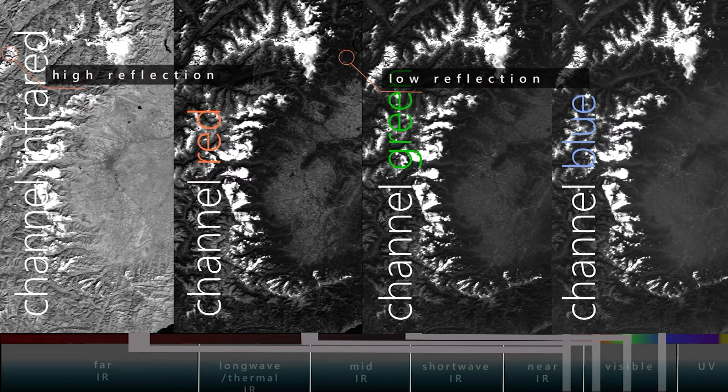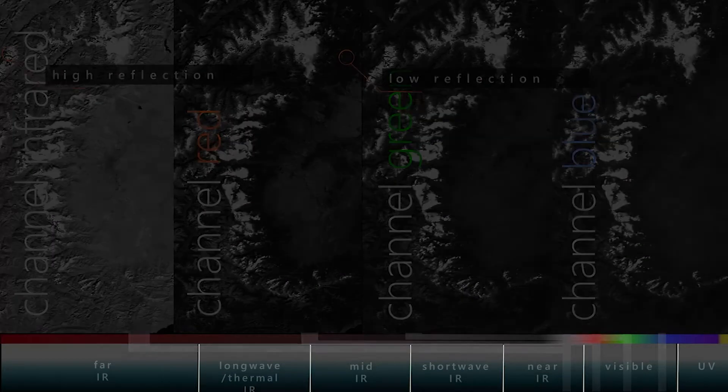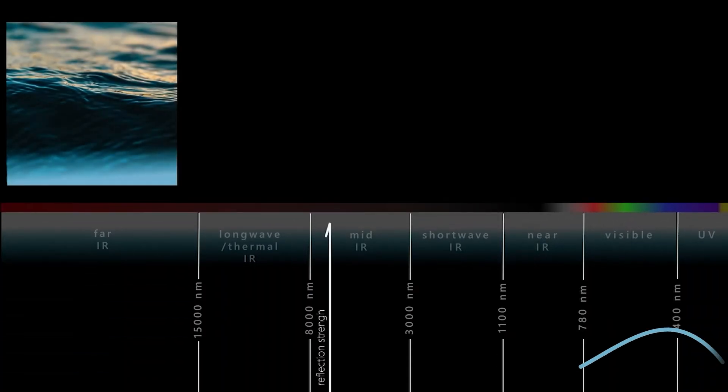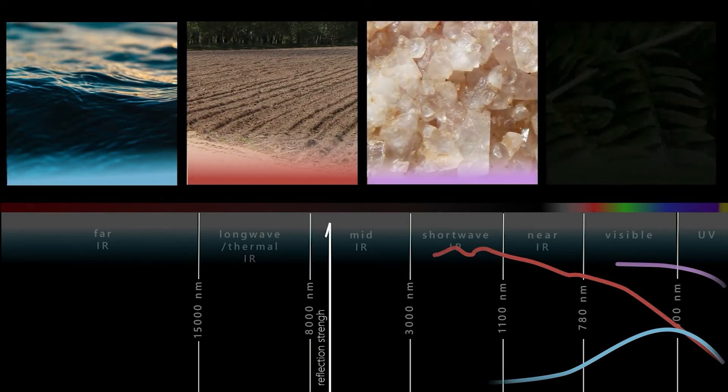What does the reflection intensity of surfaces, which we see in the grayscale image, tell us? A couple of things. But first, we need to understand that different materials have unique spectral signatures, meaning they absorb and reflect light from various wavelengths differently.